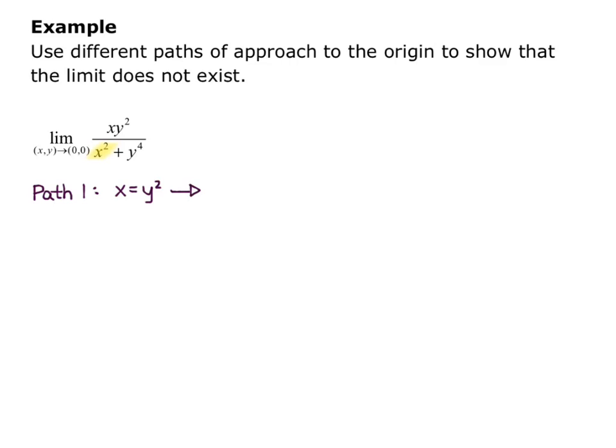Let's go ahead and plug that in. We have the limit as (y²,y) approaches (0,0), because remember x is y², of y² times y² on the top, and on the bottom, y² squared plus y to the fourth.